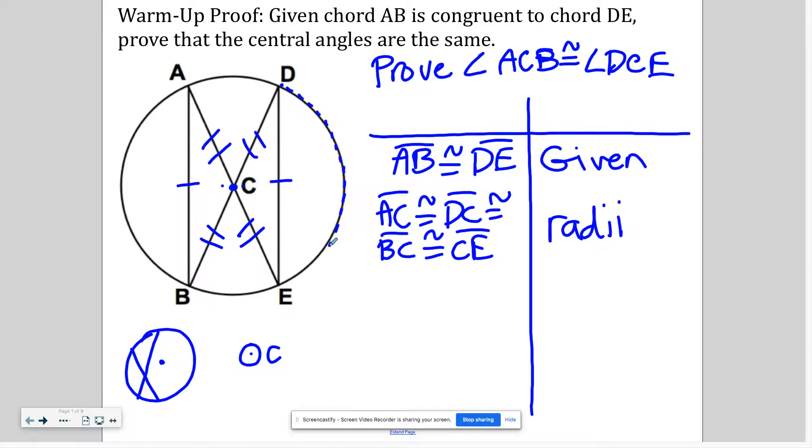That's the definition of a circle. So you can say radii are congruent or definition of a circle. That would be acceptable too, but that's really going to give me a lot of information.